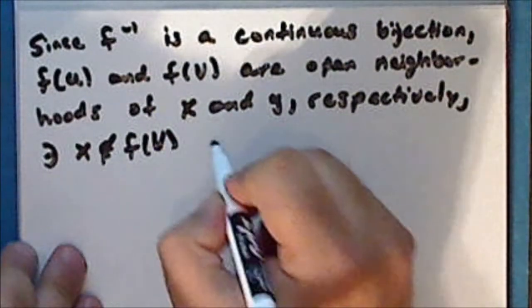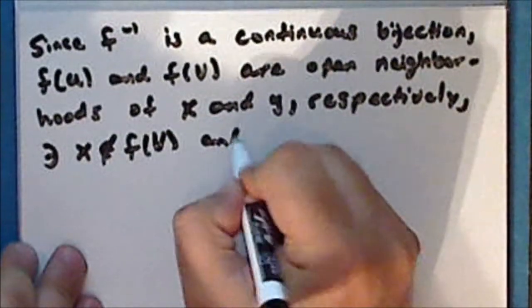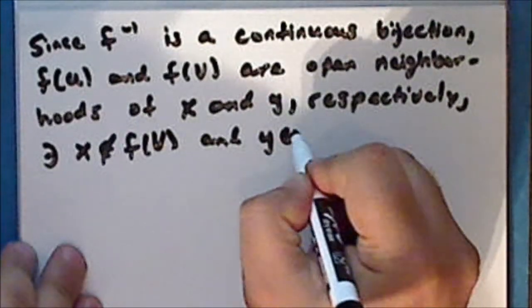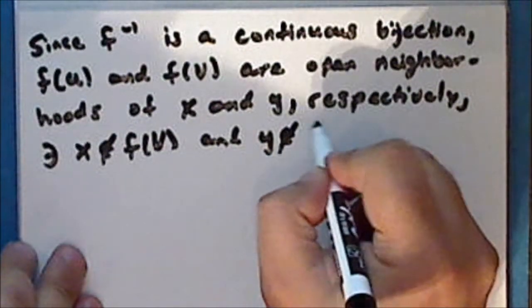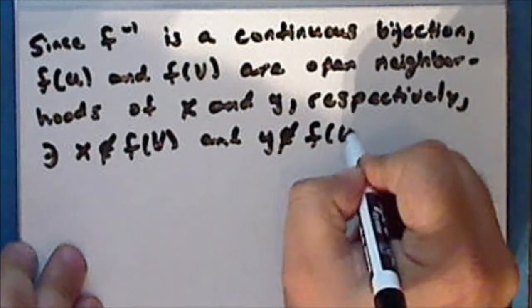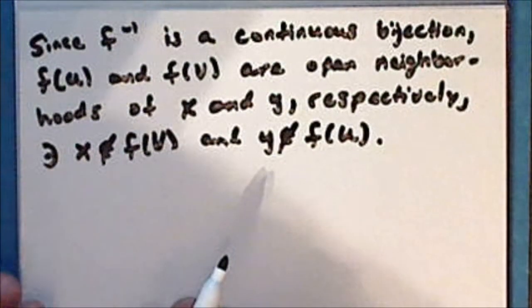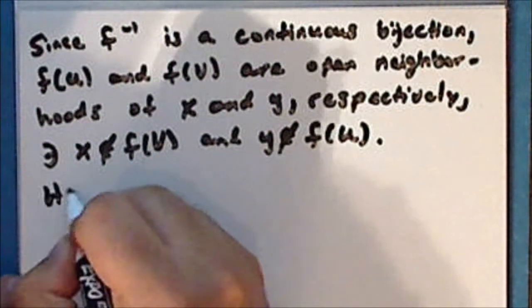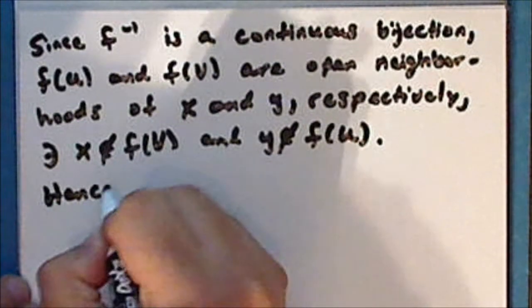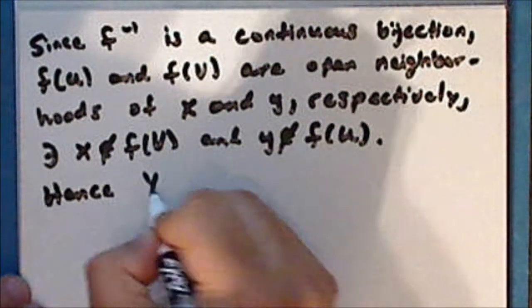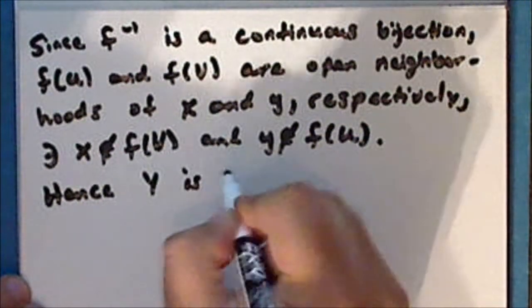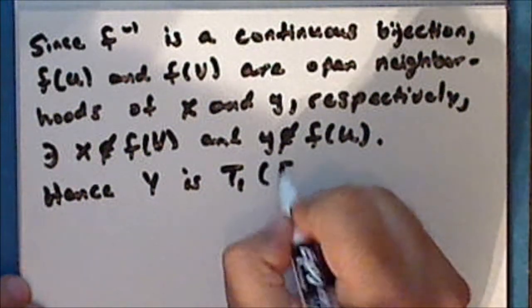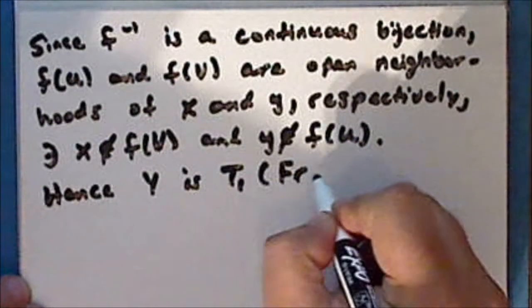The point y is not in the direct image of u, and hence the space Y is T1, or Fréchet.